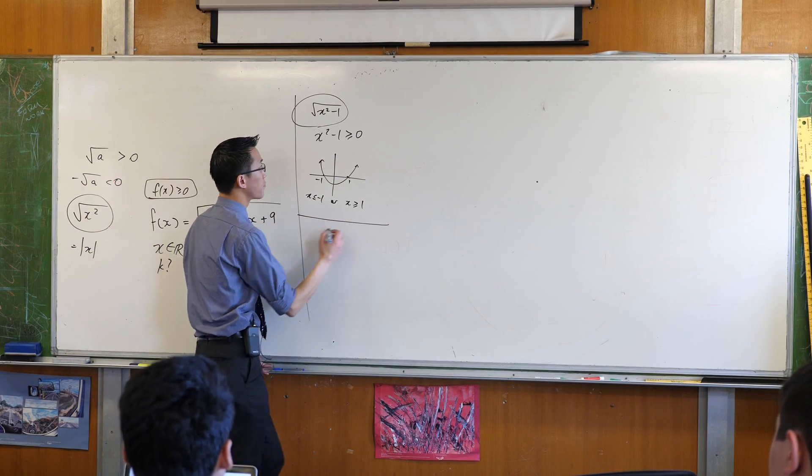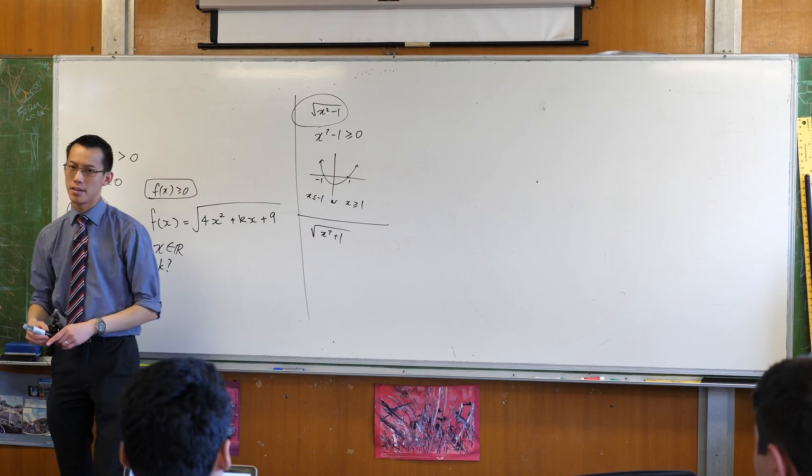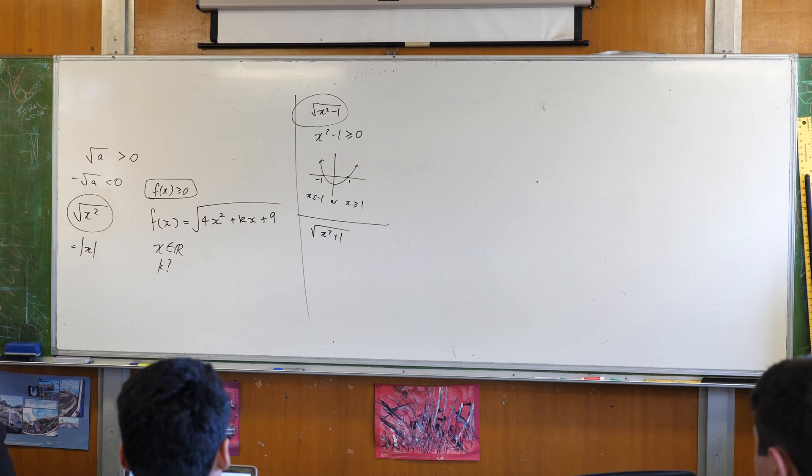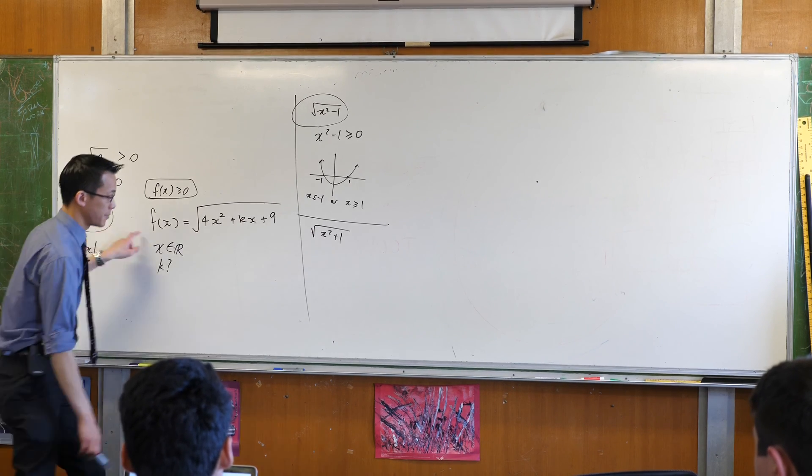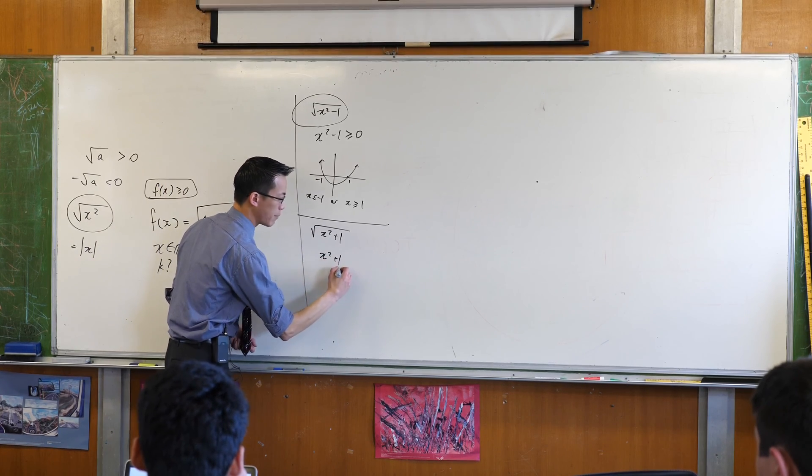Let me give you one more example. Square root of x² + 1, plus one instead of minus one. What's the domain now? The domain of this one is all real x, just like this one, because think about it. Think about what's underneath the square root. Think about x² + 1.